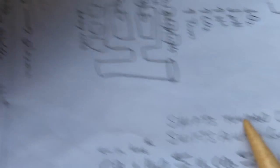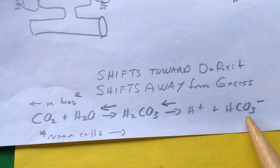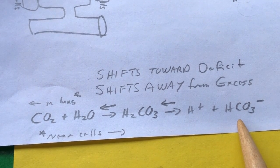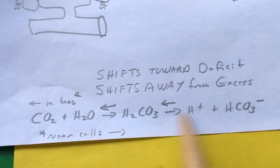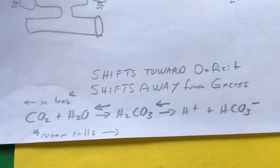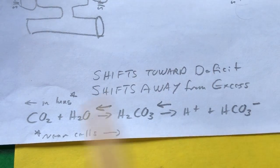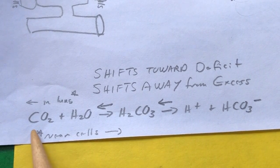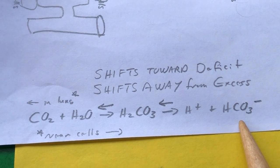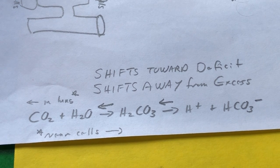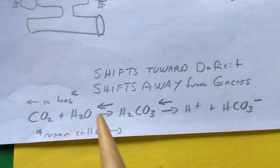This reaction can be rewritten to show how things shift: CO2 combines with water to make carbonic acid, which dissociates into H+ and HCO3−. This is a reversible reaction. According to Le Chatelier's principle — oversimplified as reactions shifting towards a deficit or away from an excess — near the hard-working cells where carbon dioxide is abundant, the equation tends to move toward forming bicarbonate. However, in the lungs where there's a deficit of carbon dioxide, everything shifts back in the other direction.